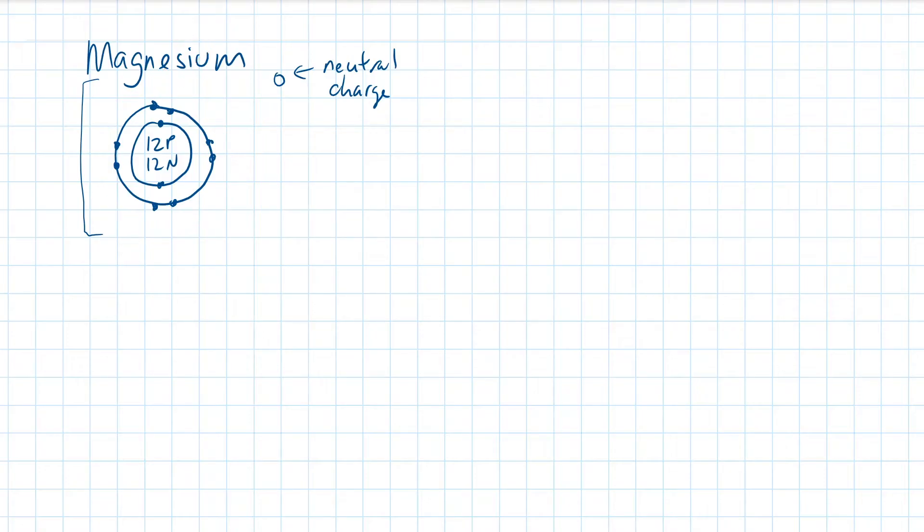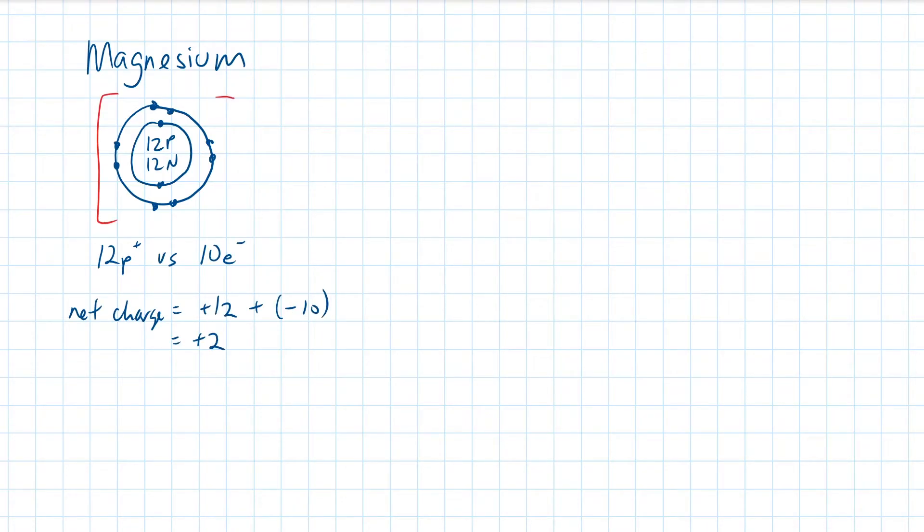In that case, once it loses the two electrons, we now have 12 protons versus 10 electrons. Who's winning? Protons. By how much? Two. So when magnesium loses two electrons, it will have a net charge of positive two. We can write that down as Mg with a small two written above the cap.